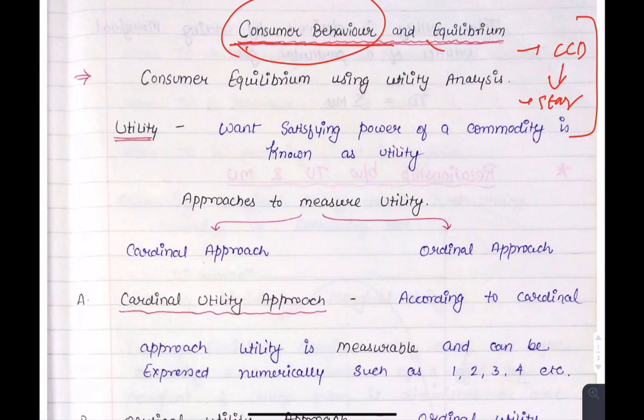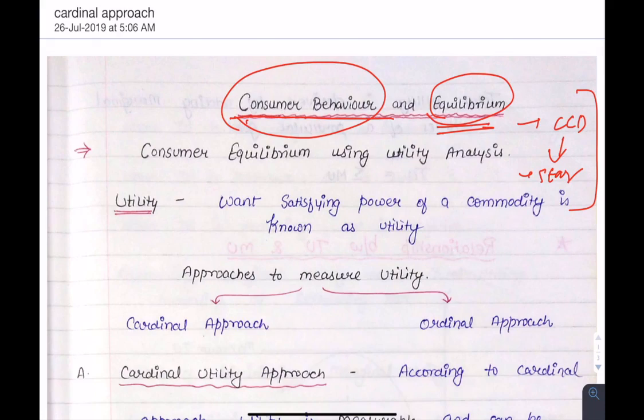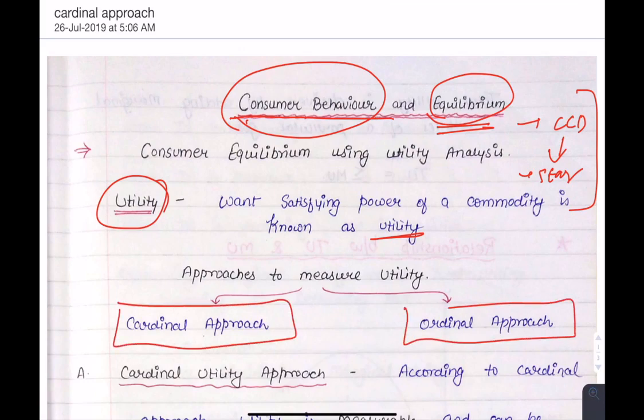Then it comes to equilibrium. When does equilibrium happen? When the consumer is getting satisfaction at the price which the supplier also wants to sell its product. Next topic is utility. How much satisfaction is a consumer getting from a commodity? That is known as utility. There are two approaches used to measure utility: cardinal approach and ordinal approach. Today we will study the cardinal approach. We will do the ordinal approach in the next lecture.